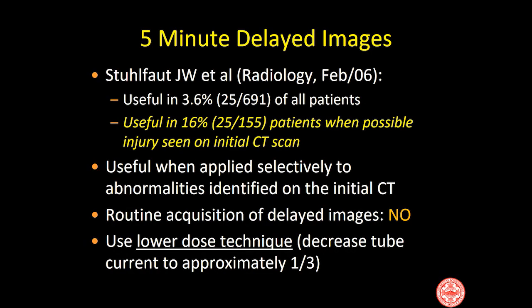The 5-minute delayed images are important not just for evaluation of renal collecting system integrity, but also to identify and characterize sources and areas of bleed in the abdomen. It is recommended that the radiation dose be lowered for delayed images. At our institution, we decrease the tube current to approximately one-third of that used for the portal venous phase. These delayed images are useful in about 16% of all blunt trauma patients in our experience.